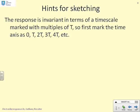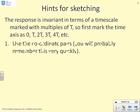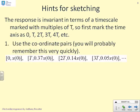Some hints for sketching: the response is invariant in terms of a timescale marked with multiples of capital T. So all we need to do is mark the time axis as 0, T, 2T, 3T, 4T, and so on. Then the actual graph becomes straightforward. The coordinate pairs you'll need to remember will be: time 0, x(0); time T, 0.37 x(0); time 2T, 0.14 x(0); time 3T, 0.05 x(0).